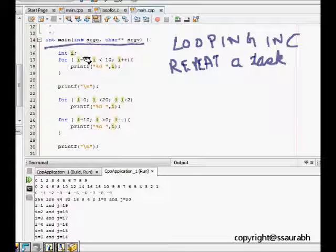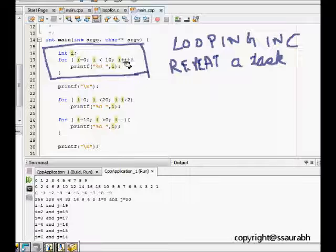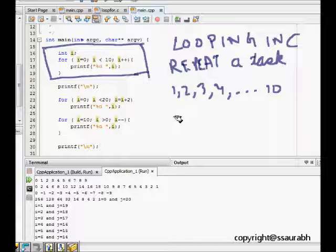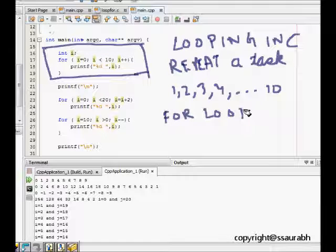Let's see our first example here, which is we want to print numbers from 1, 2, 3, 4 till say 10. What we do is that a for loop is used. We have a for loop and it has three parts.